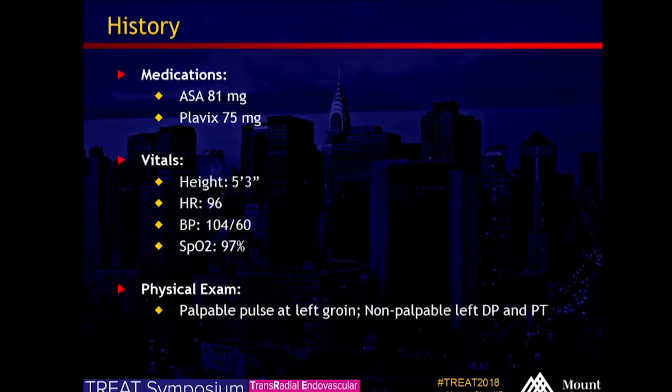She is currently on aspirin and Plavix for her coronary stents and her right peripheral stent. Her height is 5'3", which is obviously important for an R2P case, so she's a good patient candidate.